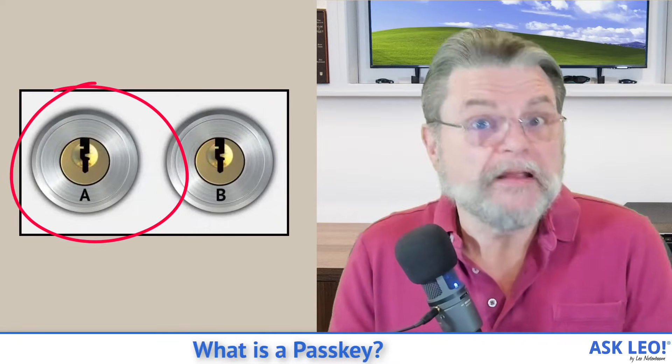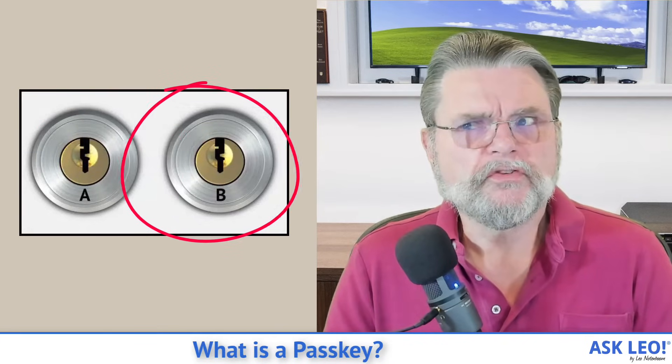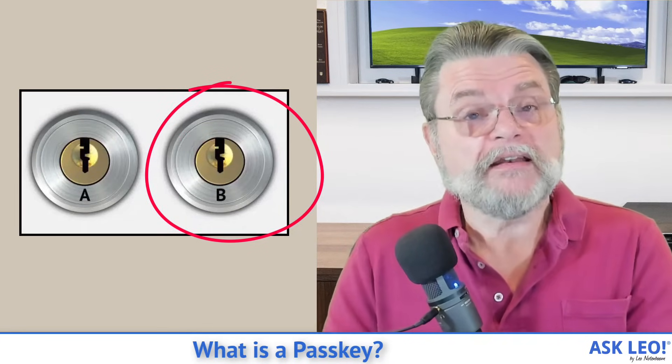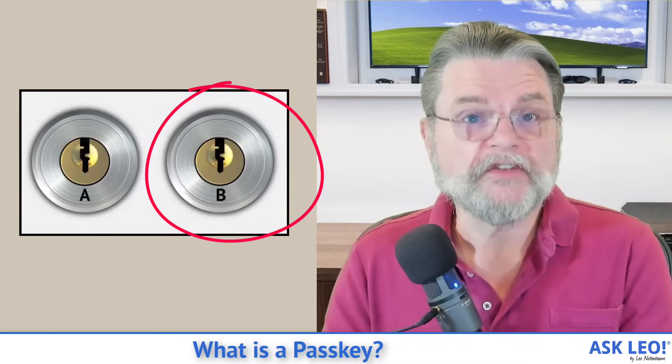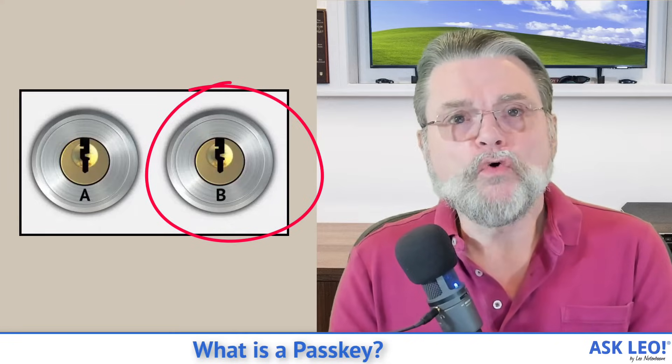The other interesting thing you can do is: I can encrypt something using my A key and anybody could decrypt it using the B key. So what's the point? The point is, if that decryption using the B key is successful, that proves that only I could have encrypted it — because only I have the A key that would encrypt it in such a way that the B key would work. Anybody with a private key can encrypt something so that the public key can be used to prove that they are the ones who encrypted it.